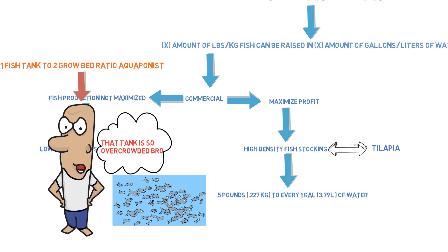It is possible to stock even denser — some people do one pound per gallon of water — but that requires adding liquid oxygen and supersaturating the oxygen levels, which isn't really done in aquaponics. So keep it at half a pound per gallon as your maximum. Don't go any further than that. That's how you maximize profit with the fish.